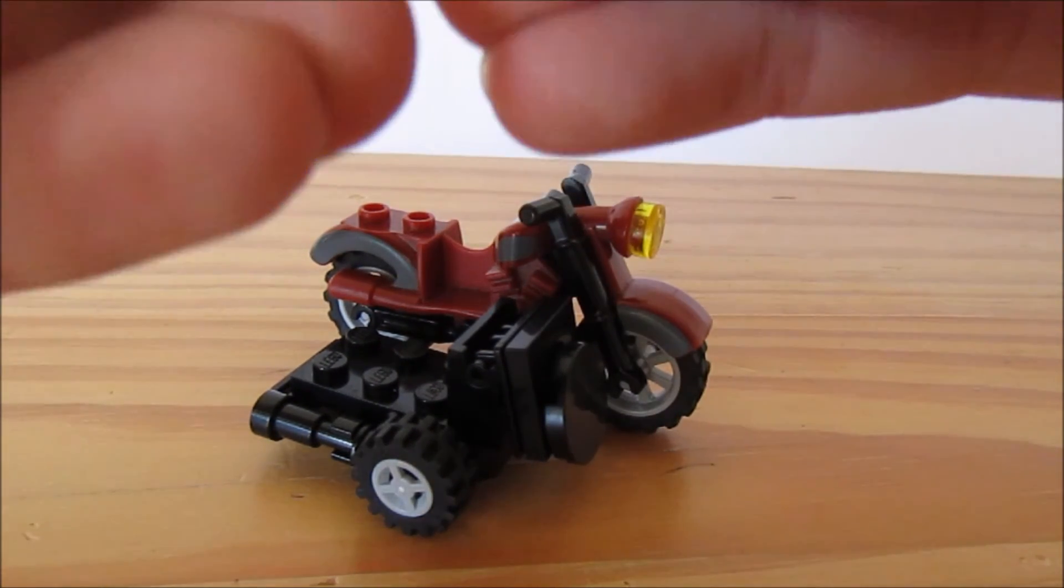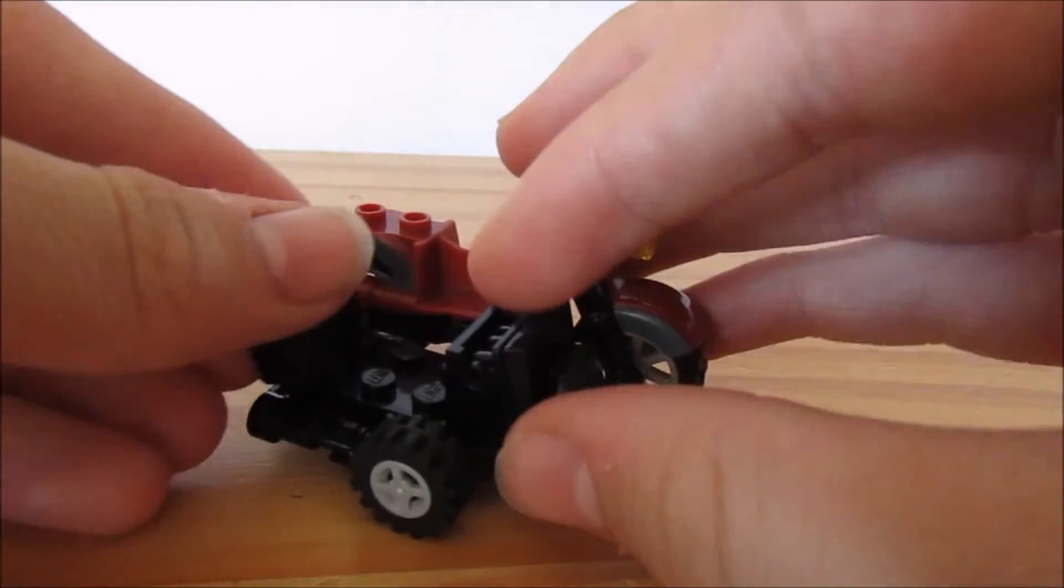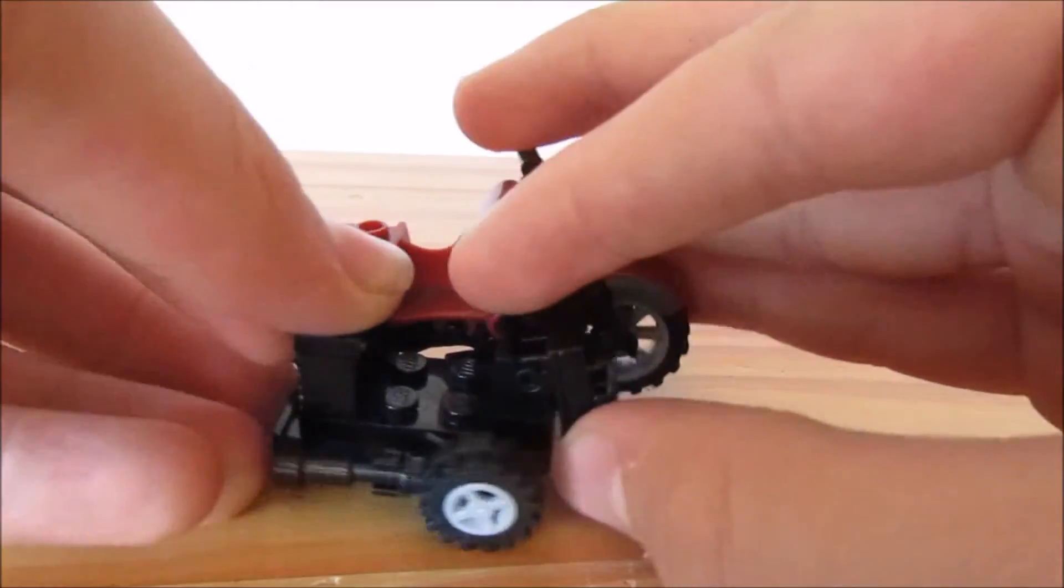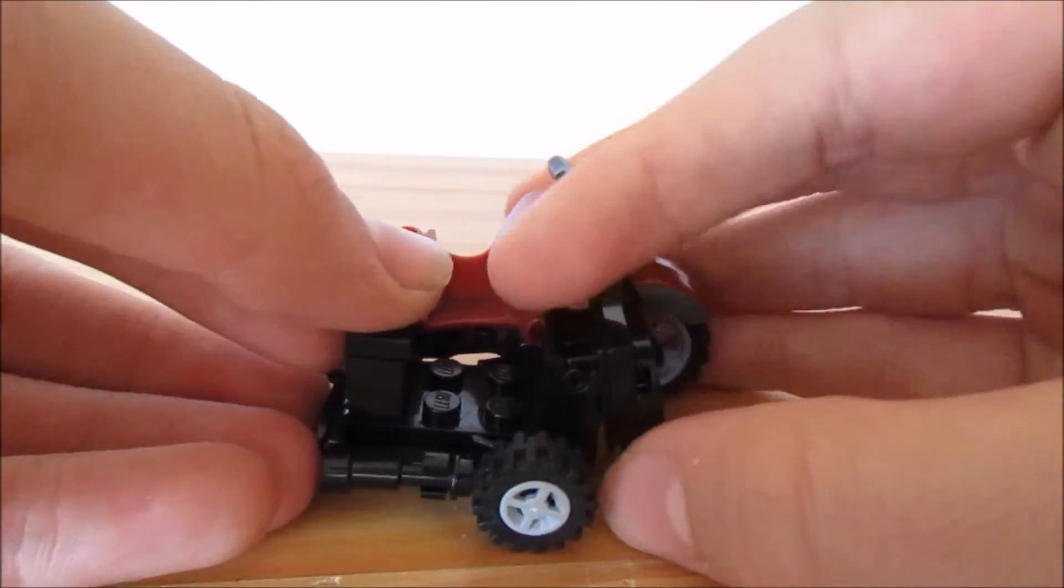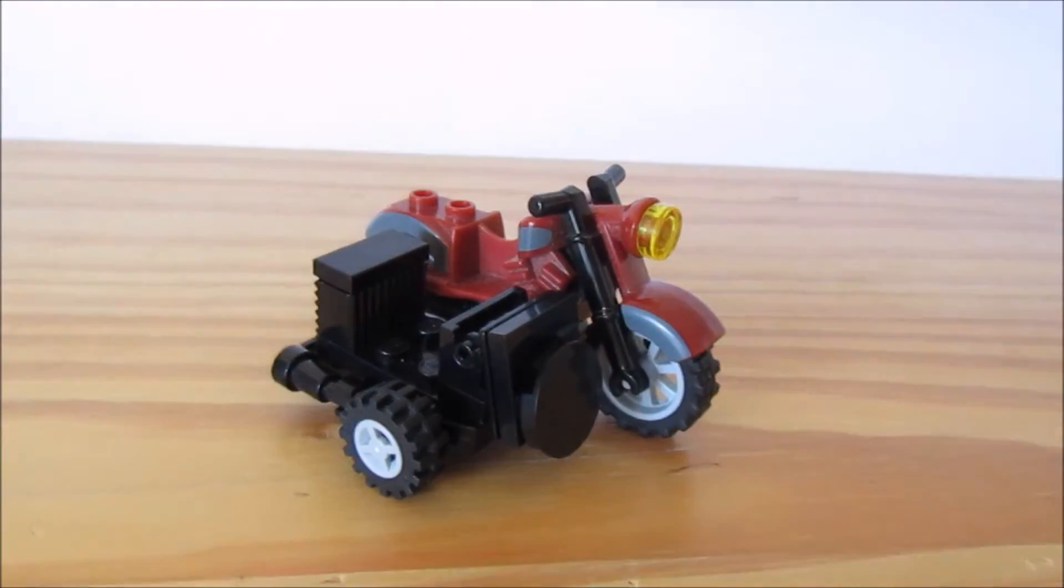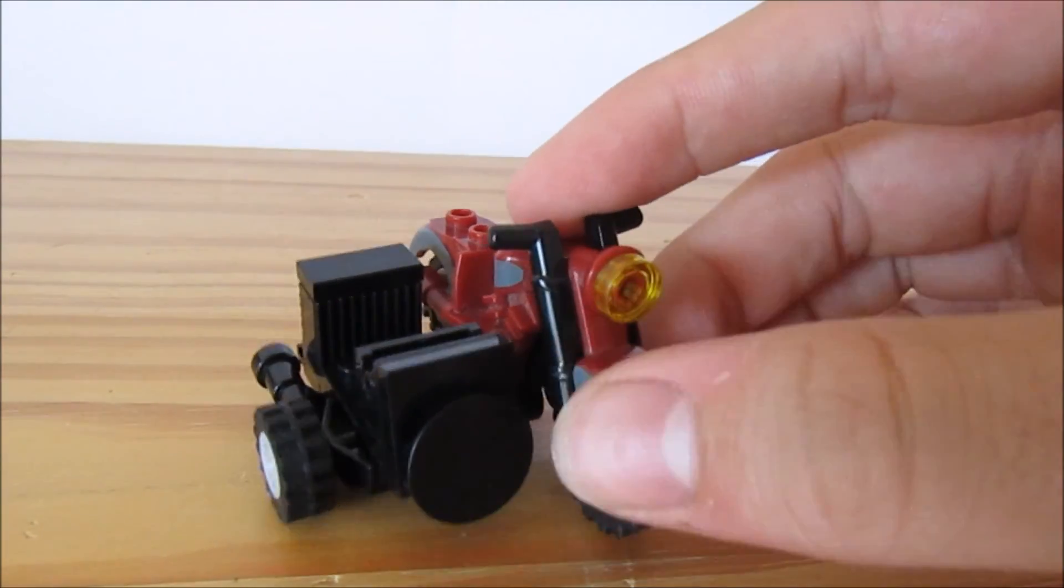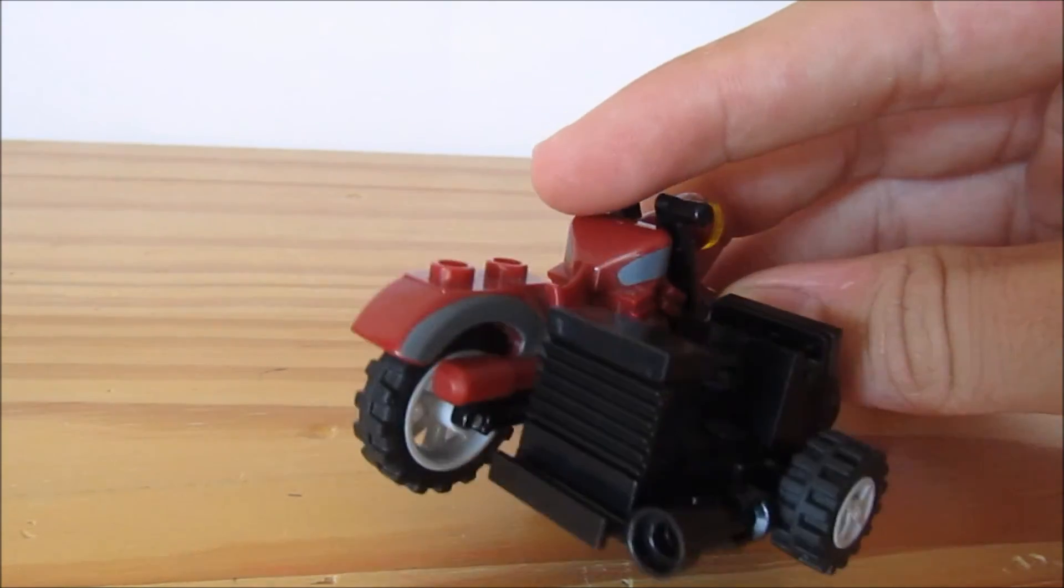Now we have two pieces left. We're going to put these on the back, and now this can't turn. There we go - there is the motorbike with the sidecar.